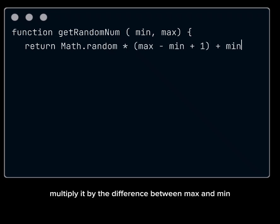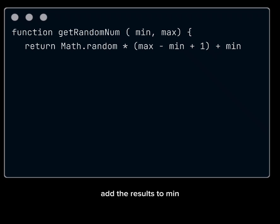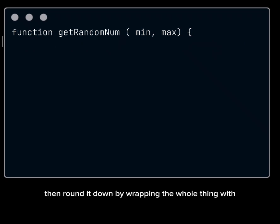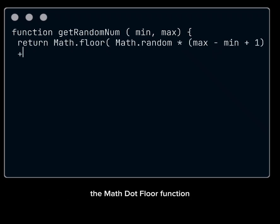Multiply it by the difference between max and min and add 1 to it, then add the result to min and round it down by wrapping the whole thing with the Math.floor function.